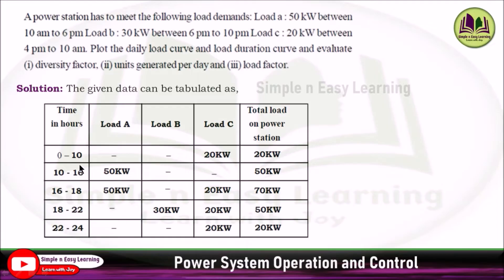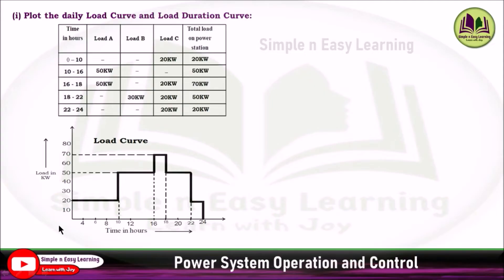Now you can add all the loads for the given period of time: 20 kilowatt from 0 to 10, 50 kilowatt from 10 to 16, 70 kilowatt from 16 to 18, 50 kilowatt from 18 to 22, and 20 kilowatt from 22 to 24. To plot the load curve: 0 to 10 is 20 kilowatt, 10 to 16 is 50 kilowatt, 16 to 18 is 70 kilowatt, 18 to 22 is 50 kilowatt, and 22 to 24 is 20 kilowatt.